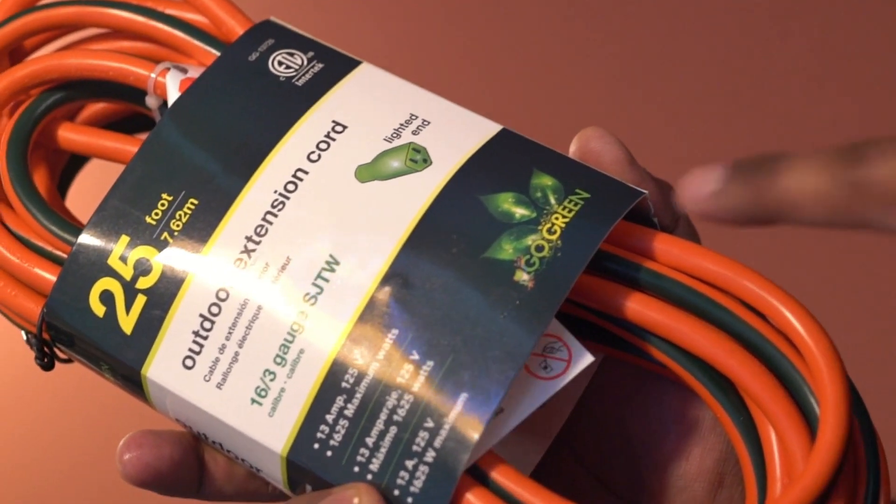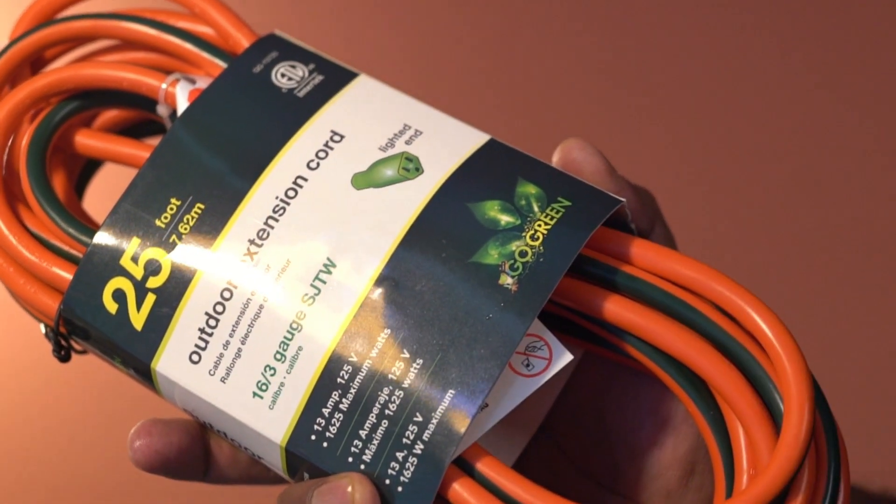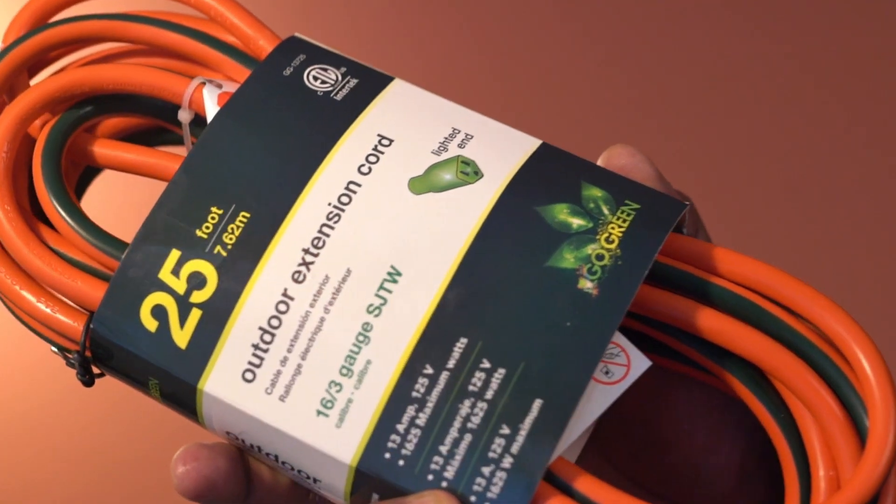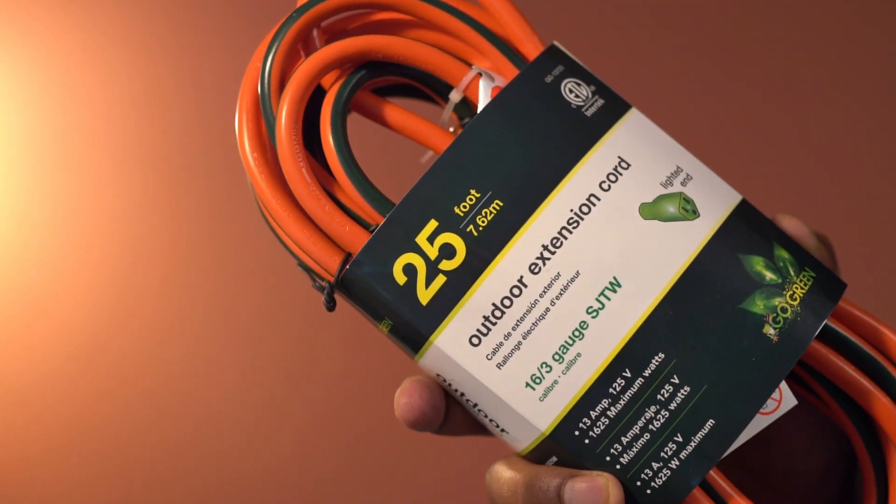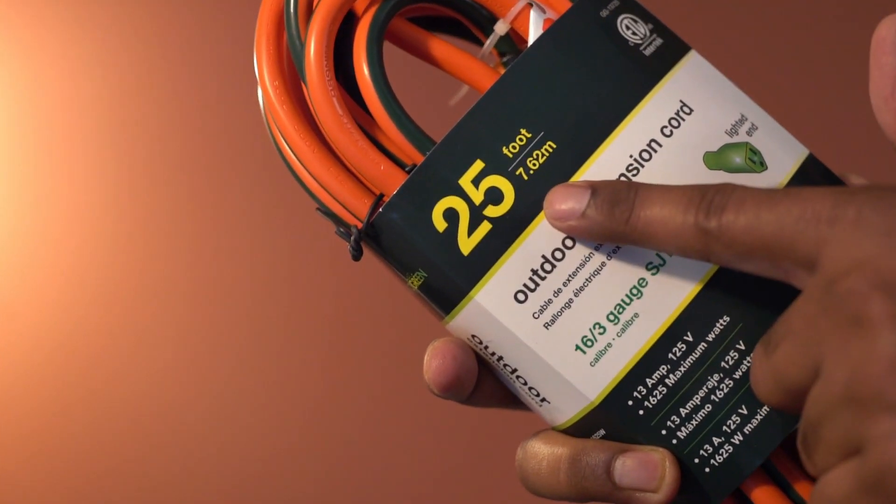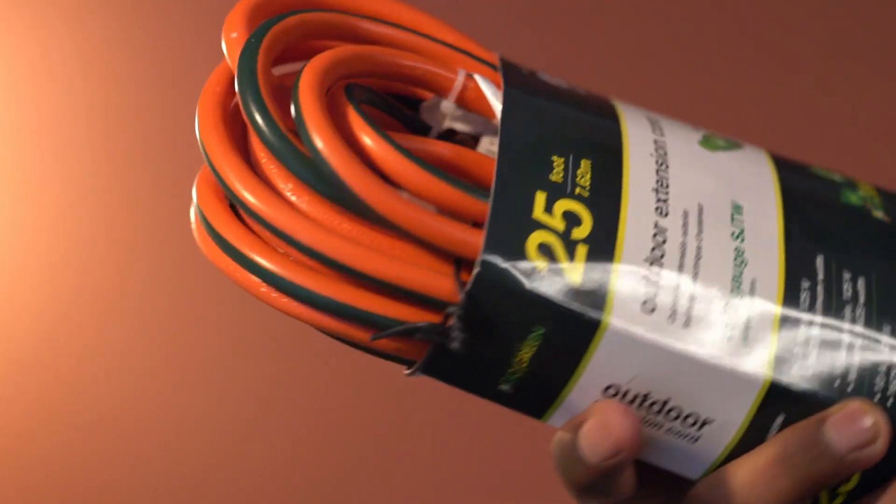This is an extension cord from Go Green. This 16-gauge cord comes in multiple sizes and colors. The length of this one is 25 feet, and the color is orange.